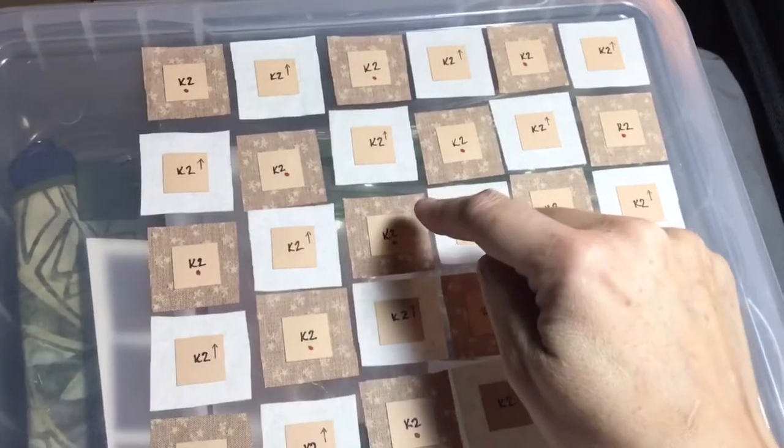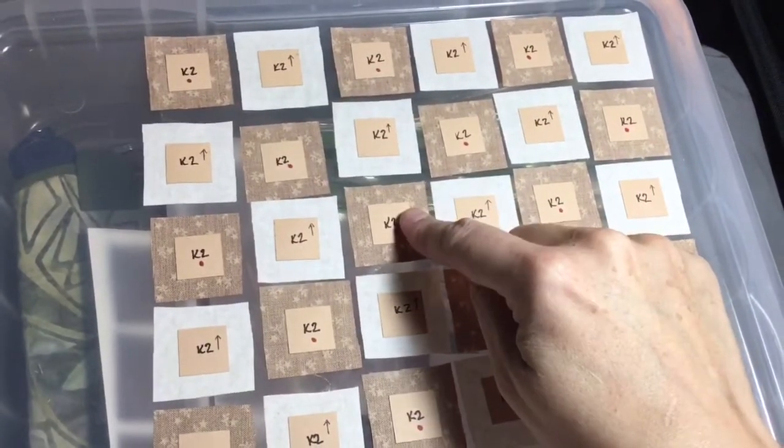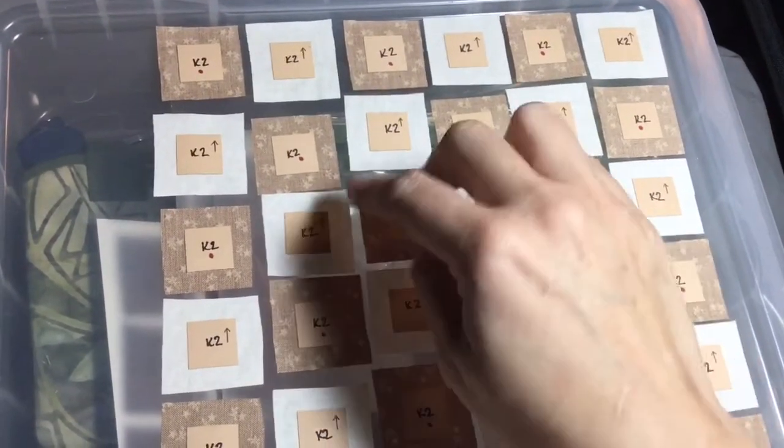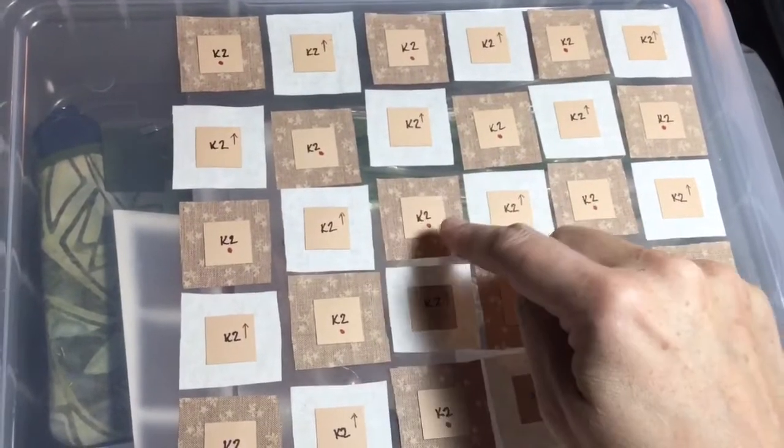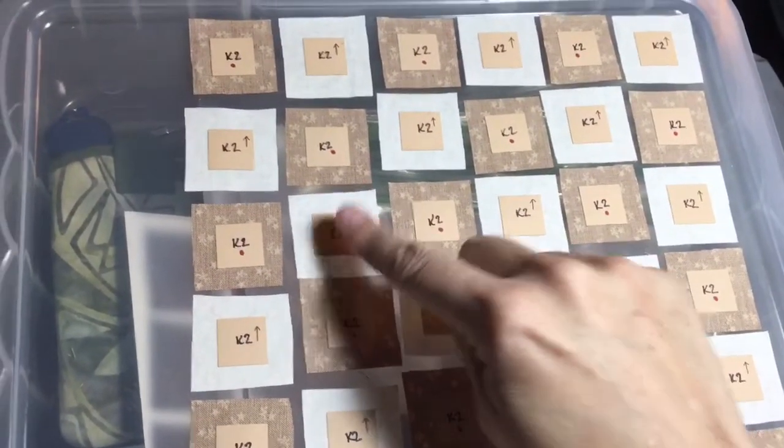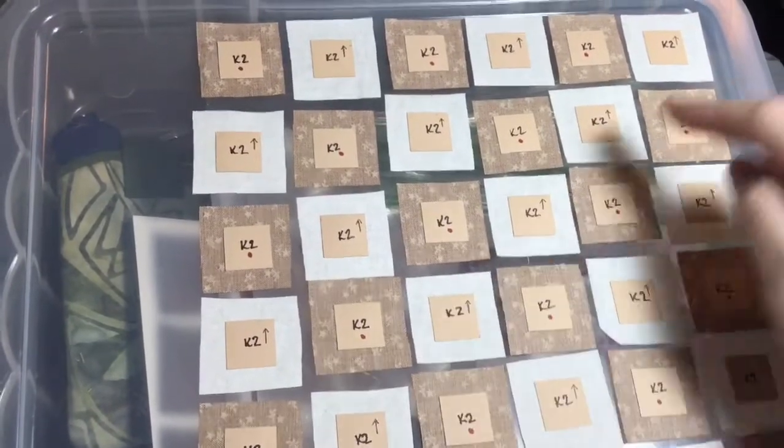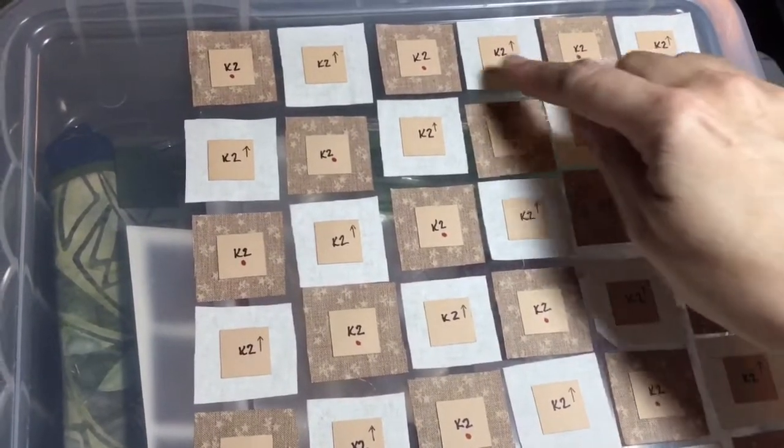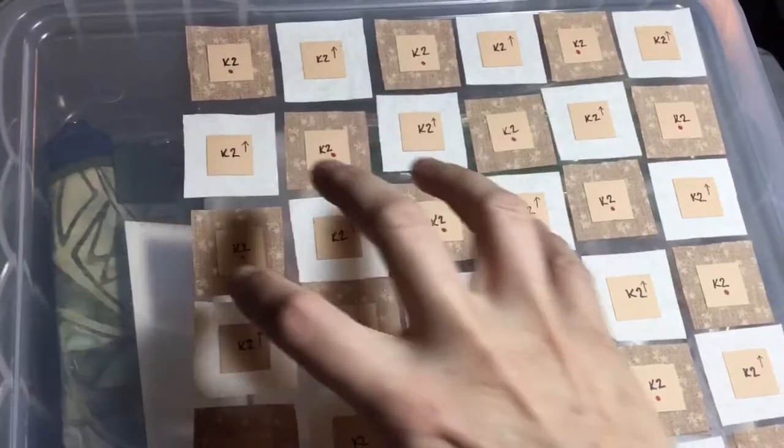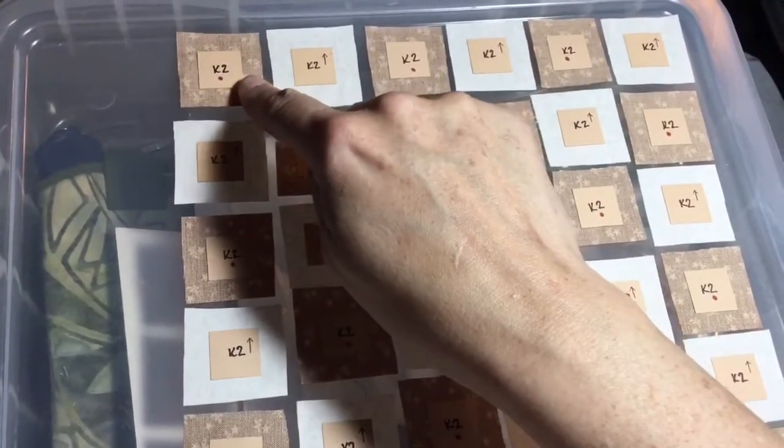I'm gonna baste the focus fabric squares one way first and then the other, and then I'm gonna do the opposite on the background. I've got a directional background, which is rare for me, so I'm gonna have to baste these and attach them as I go.